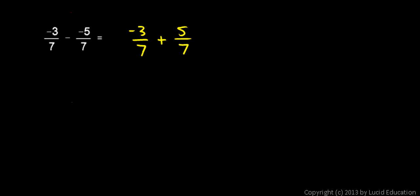And now, since these are both sevenths, I can just combine the numerators directly. Negative 3 sevenths plus 5 sevenths would give me 2 sevenths, because negative 3 plus 5 is 2.